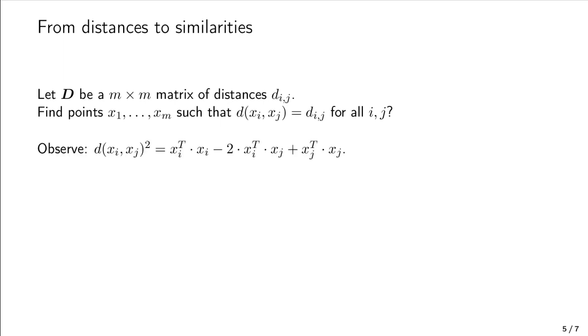First, let's inspect the distance between xi and xj in more detail. Using linear algebra, we can rewrite the squared distance between xi and xj as the product of xi with itself, minus 2 times the product of xi and xj, plus the product of xj with itself.